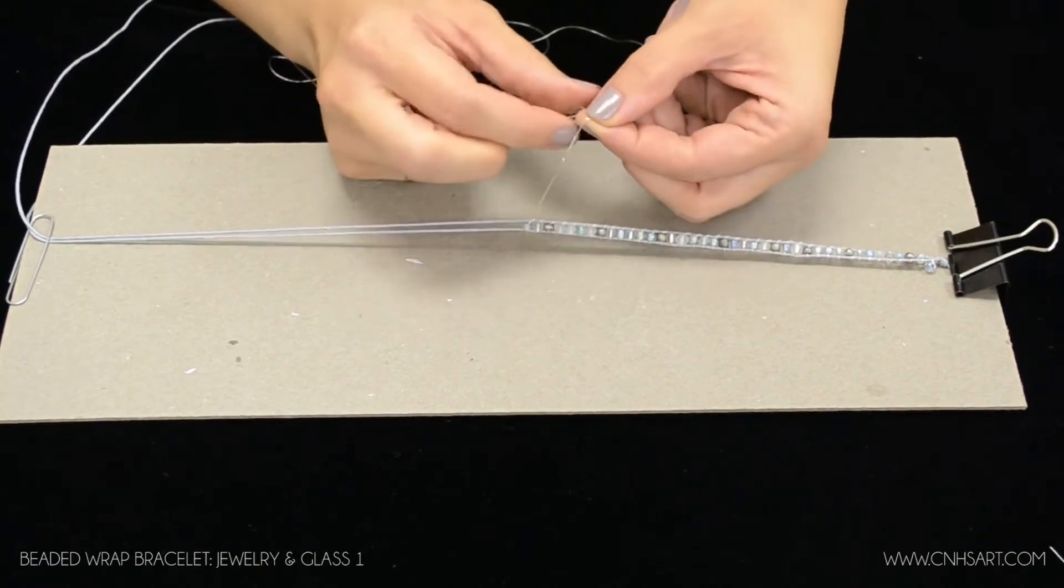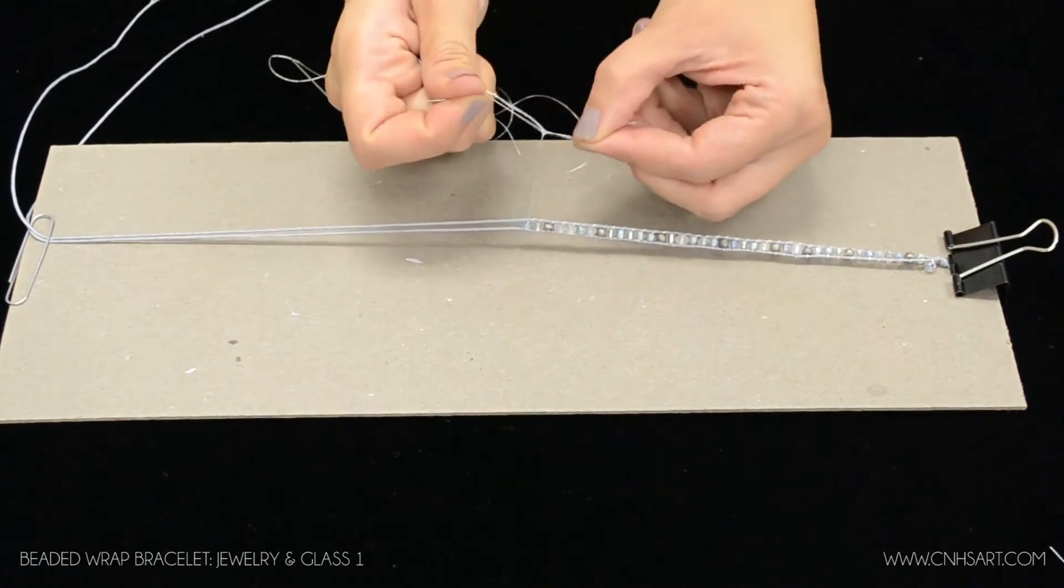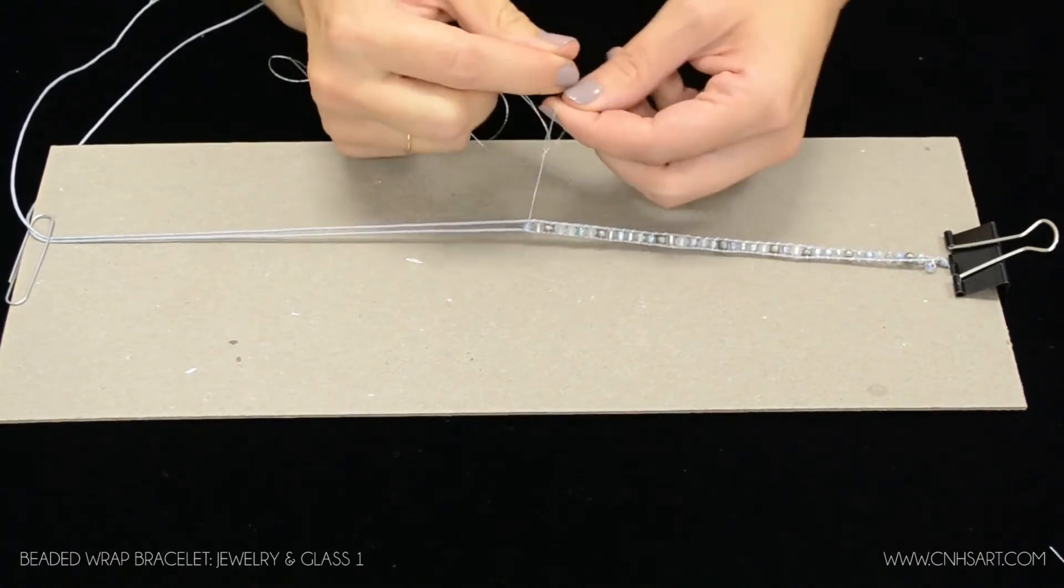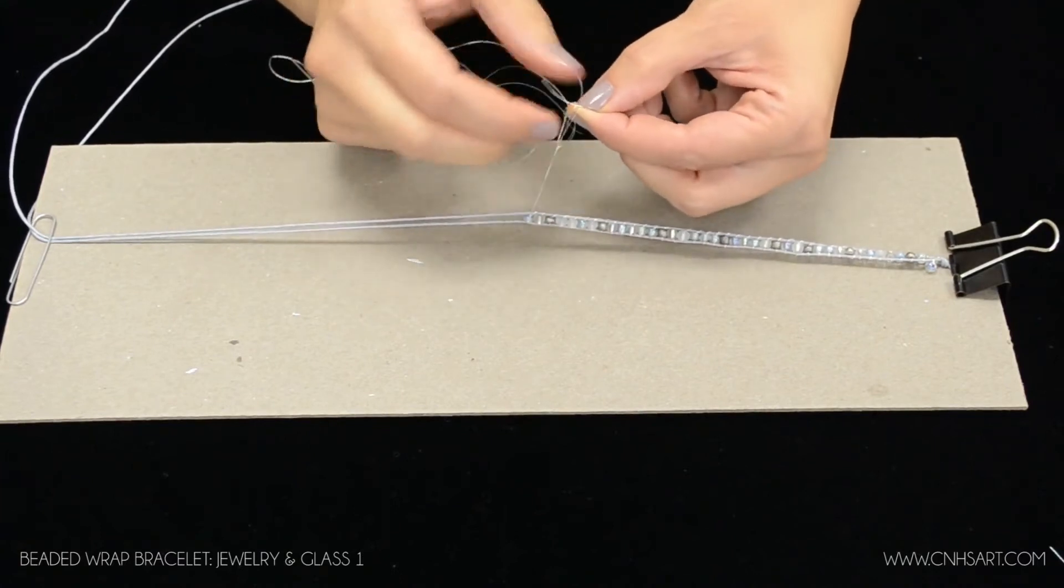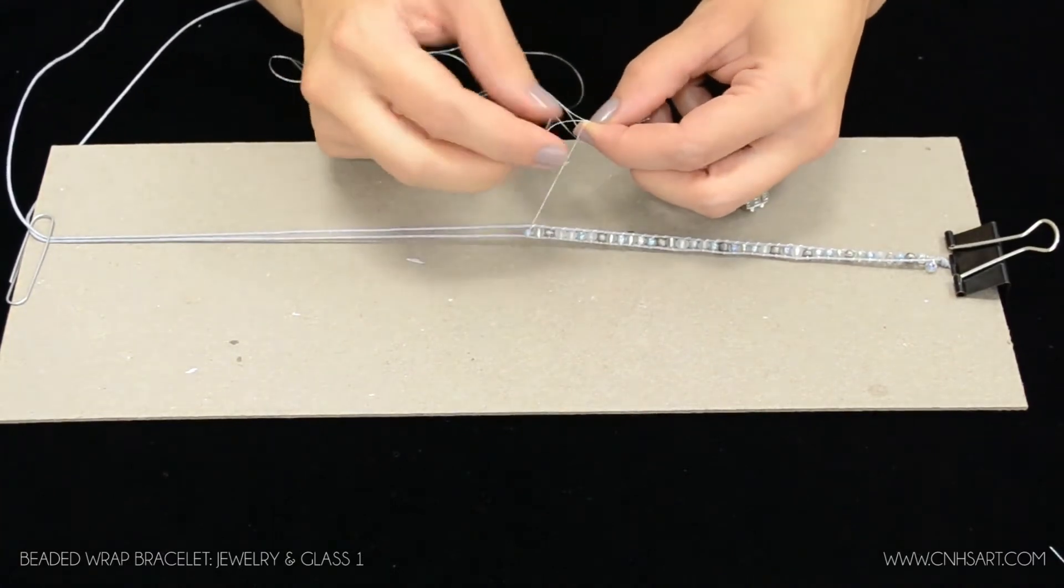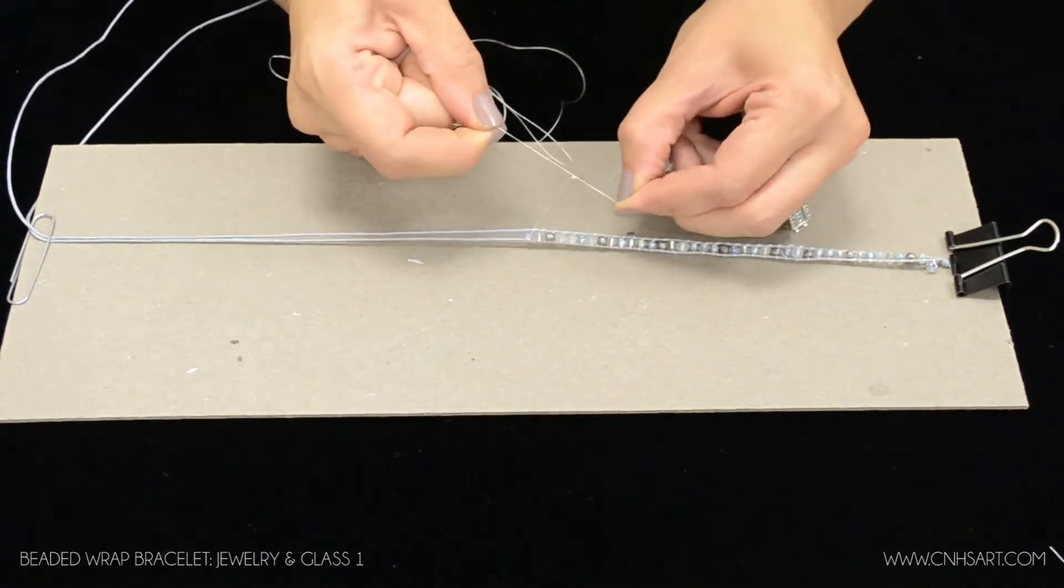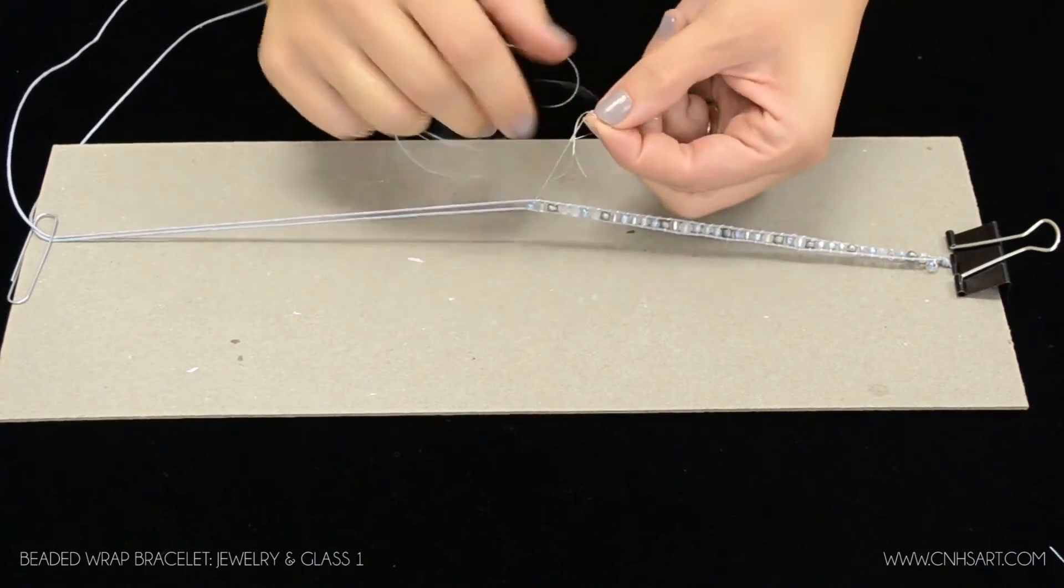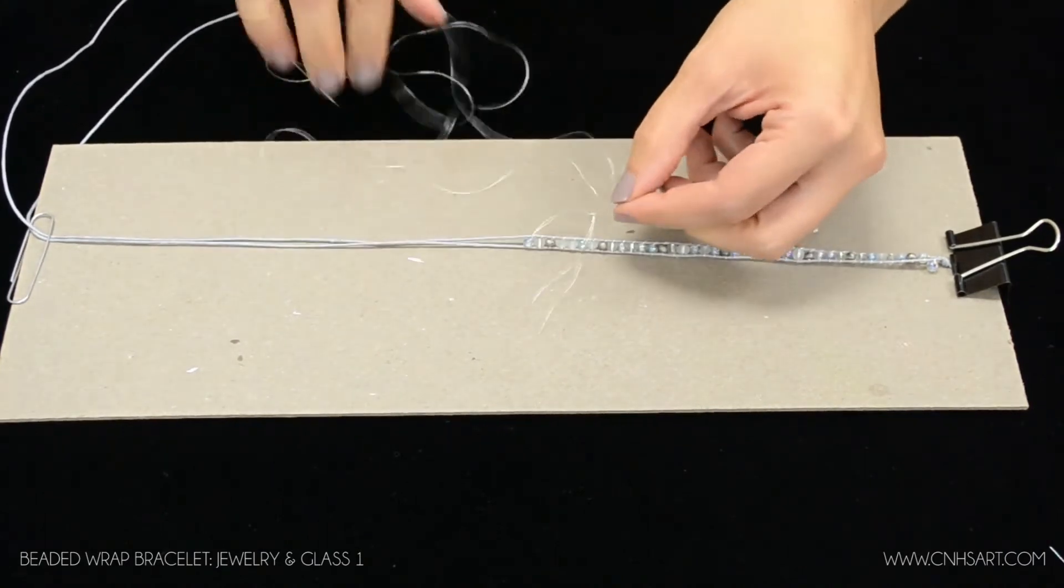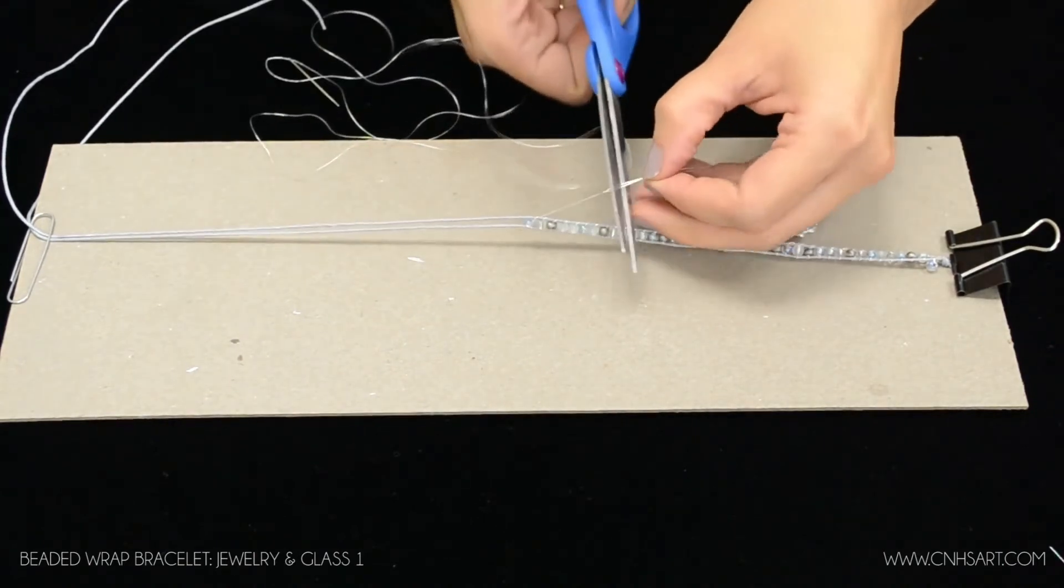And I always tell kids to make sure that they tie it at least three times. Two times especially will still allow that thread to slip around on you. And the last thing you want is for your knot to come undone and your beads to slip off. So I'm going to tie it four times. And then I'll just trim off the extra ends here. And then I'm ready to continue on.